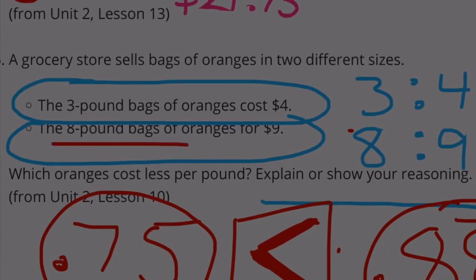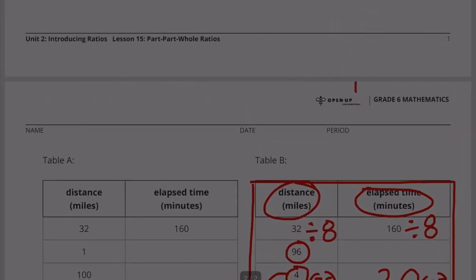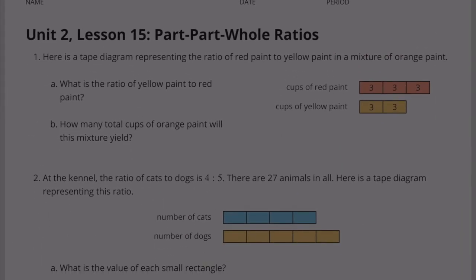So 8 pound bags for $9 is a better deal. You get more oranges for your money at 8 pound bags of oranges for $9. Congratulations! You have completed Unit 2 Lesson 15, Part Part Whole Ratios.